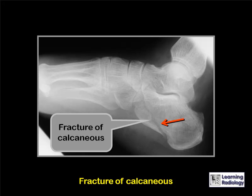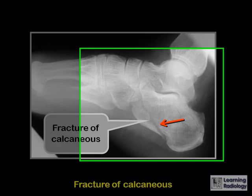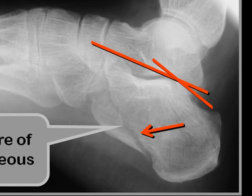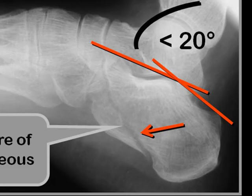This patient has a fracture of the calcaneus, shown by the red arrow. If we look at Böhler's angle in this patient, it becomes obvious that it is flattened and measures much less than 20 degrees — it measured about 8 degrees in this patient.